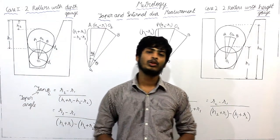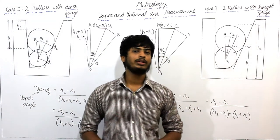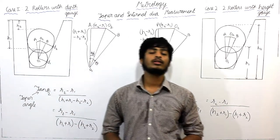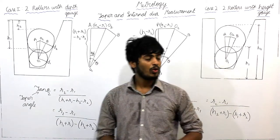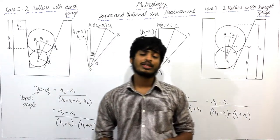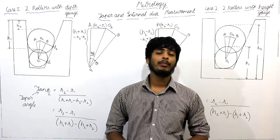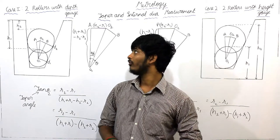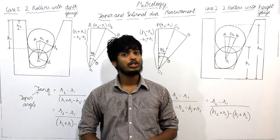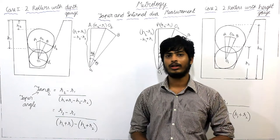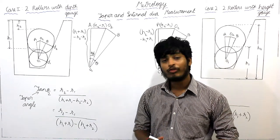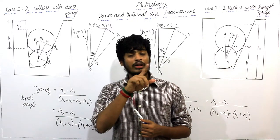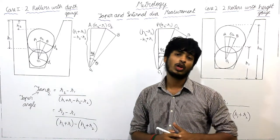Even though we have many angle measuring equipments for measuring angles, for some components we can't measure angles using those equipments. So the taper angle of those components can be measured by measuring linear dimensions using balls, rollers, depth gauge, height gauge, and micrometer. For the GATE exam, under this topic we have 8 important cases for solving problems.